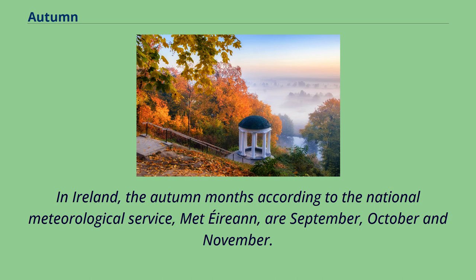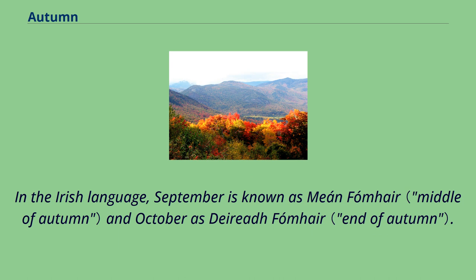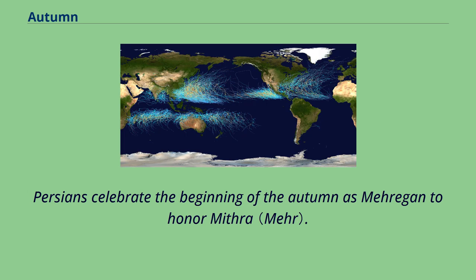In Ireland, the autumn months according to the National Meteorological Service, Met Éireann, are September, October, and November. However, according to the Irish calendar, which is based on ancient Gaelic traditions, autumn lasts throughout the months of August, September, and October, or possibly a few days later, depending on tradition. In the Irish language, September is known as Meán Fómhair and October is Deireadh Fómhair. Persians celebrate the beginning of the autumn as Mehrigan to honor Mithra.